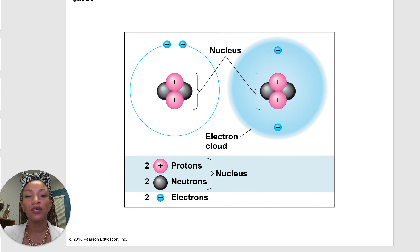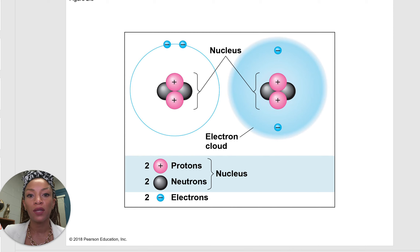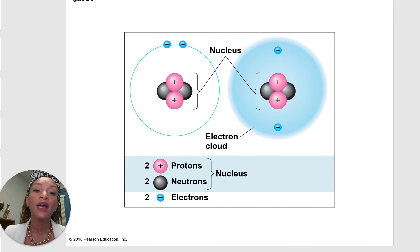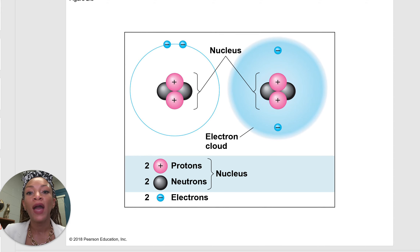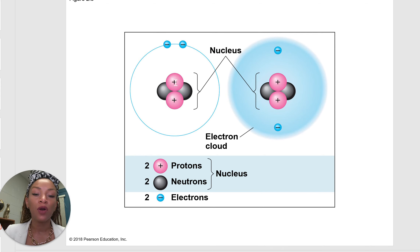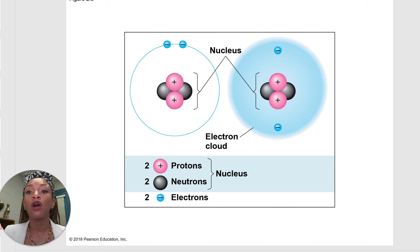Let's look at this picture to make it easier to understand. This whole circle is an atom, and the middle part is the nucleus — just like in cells, the nucleus is typically the center part. In the nucleus, we have our positive charges — our protons — and our neutral charges — our neutrons. Surrounding the nucleus, we have the electrons in something called an electron cloud. Remember: neutrons and protons are in the nucleus; electrons are on the outside with negative charges.